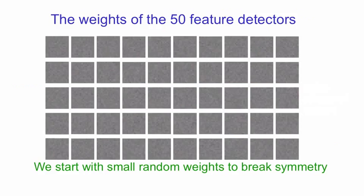So let's start with some random weights for the 50 feature detectors. We'll use small random weights, and each of these squares shows you the weights to the pixels coming from a particular feature detector. The small random weights are used to break symmetry, though because the update rule is stochastic, we don't really need that. After seeing a few hundred examples of digits and adjusting the weights a few times, the weights are beginning to form patterns.